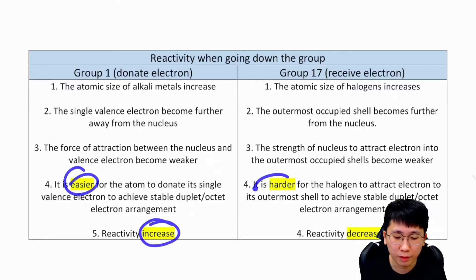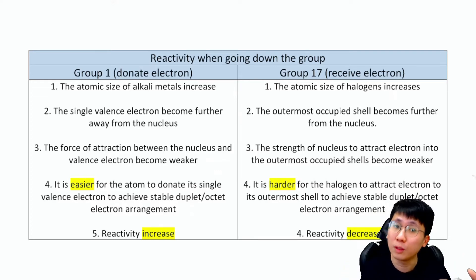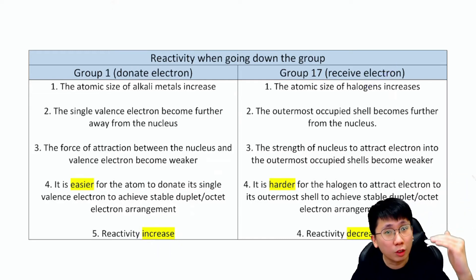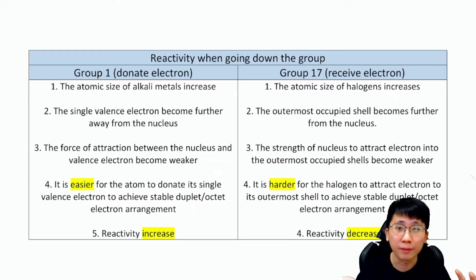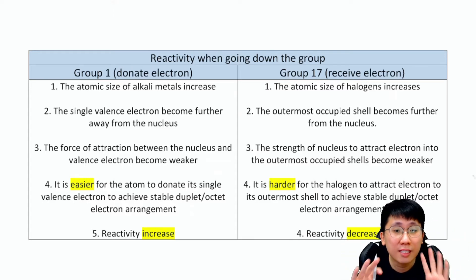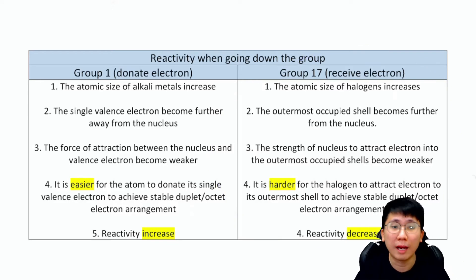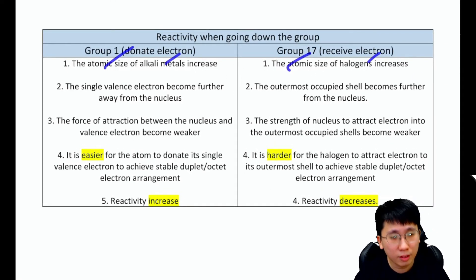The key is to understand: when going down the group, is it easier or harder to do what the group wants to do? Group 1 is trying to donate — going down makes it easier, so reactivity increases. Group 17 is trying to receive — going down makes it harder, so reactivity decreases. These two main differences are what you'd write in an essay question. In the exam they'll ask about one group at a time, but understanding both helps you avoid confusion.